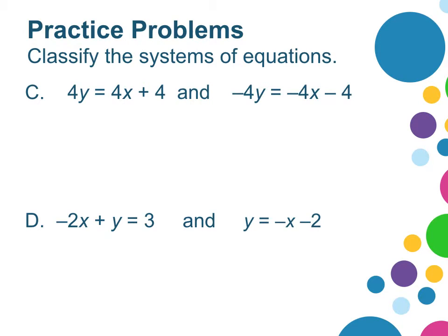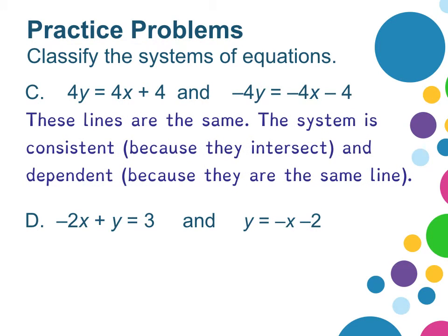All right, in example C, you were asked to classify the system of equations. Therefore, give it a type based on the number of solutions that the system of equations has. In example C, we find out these lines are the same. Therefore, we call the system consistent, because they do intersect, and dependent, because they're the same line.